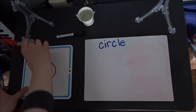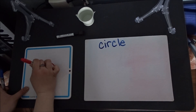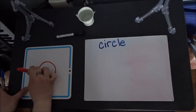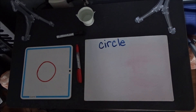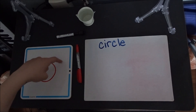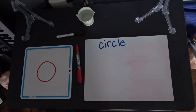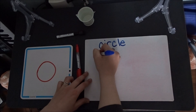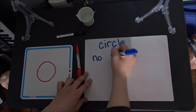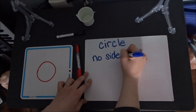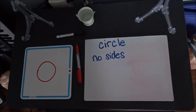Now let's fix up our circle a little bit. There we go. Now, does our circle have any sides? I don't think so. There are no real sides we can count — it's just one continuous line.